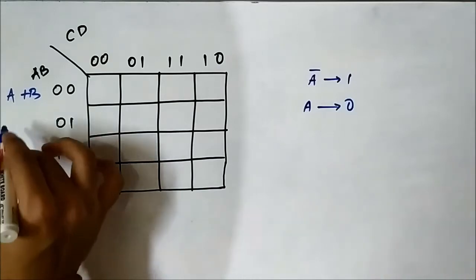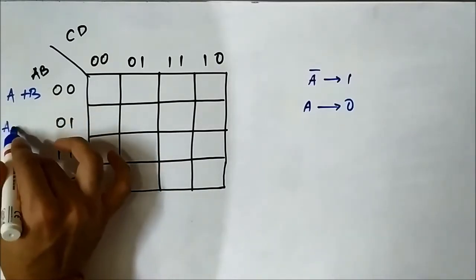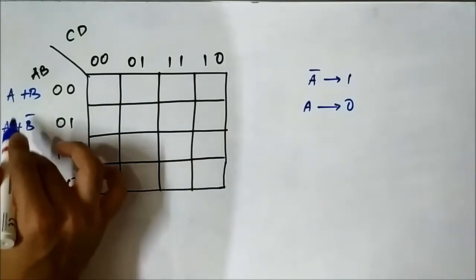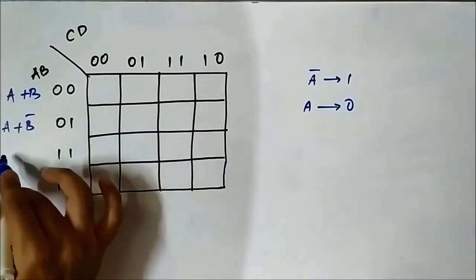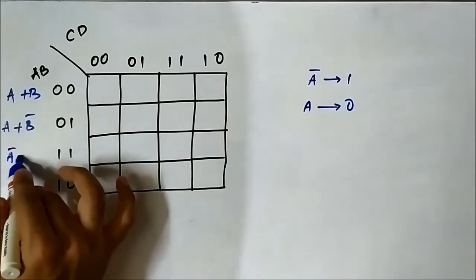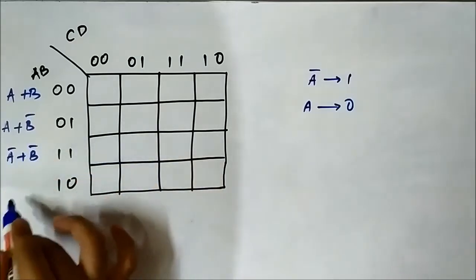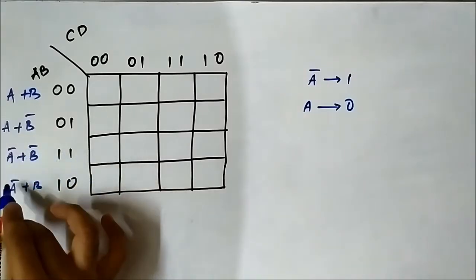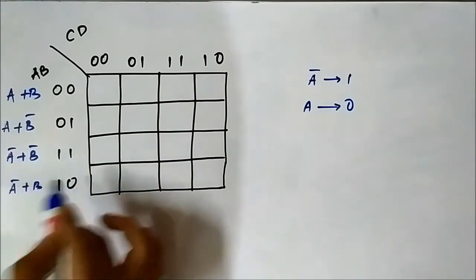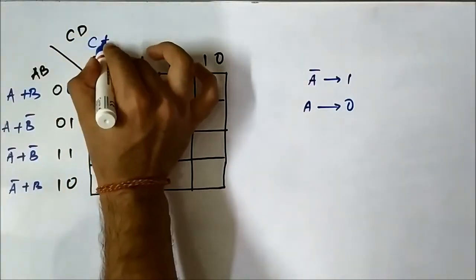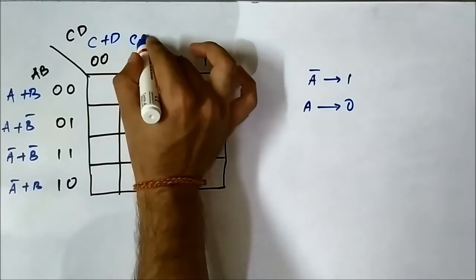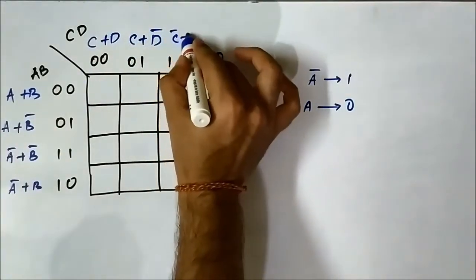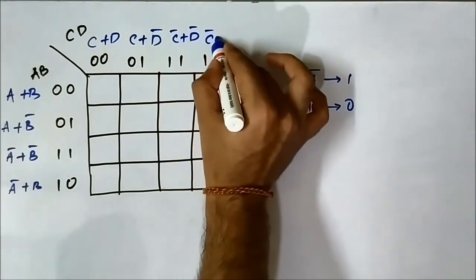Similarly, the next cell will be A or B̄ — A for 0, B̄ for 1, with OR because it is a sum term or max term. Then A̅ or B̅, and A̅ or B. On the other axis, it will be C or D, then C or D̄, then C̅ or D̅, and finally C̅ or D.